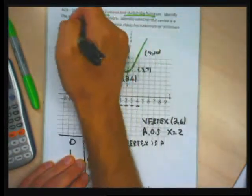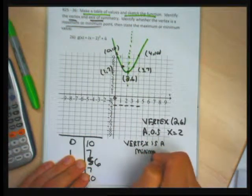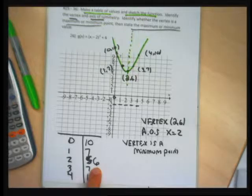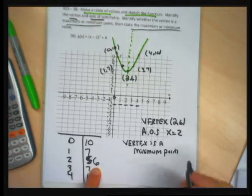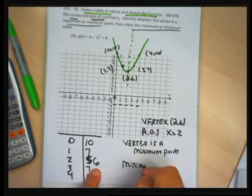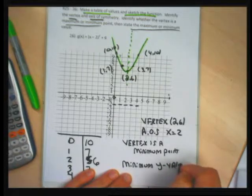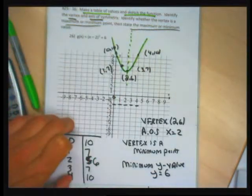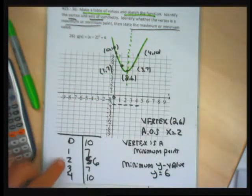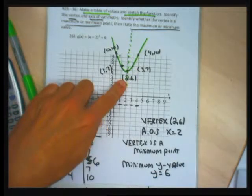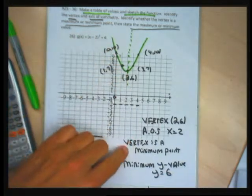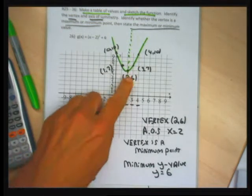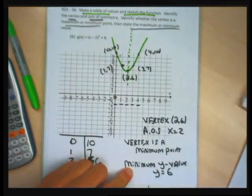Vertex is (2, 6), axis of symmetry is x equal to 2. Because the vertex is at the bottom of the parabola, the vertex is a minimum point. The minimum y-value for any point on the graph is y equal to 6 — the y-coordinate of the vertex is always the smallest y-value when the vertex is a minimum point. That's all four features: table, graph, vertex, axis of symmetry, classification as minimum, and the minimum y-value.